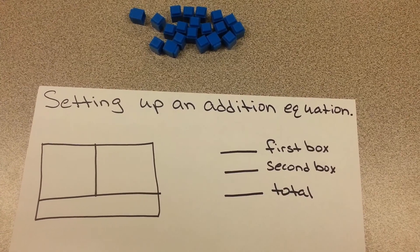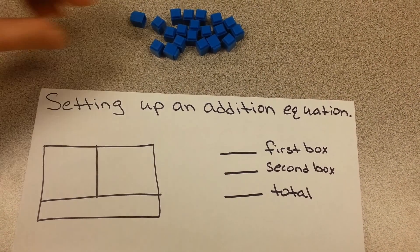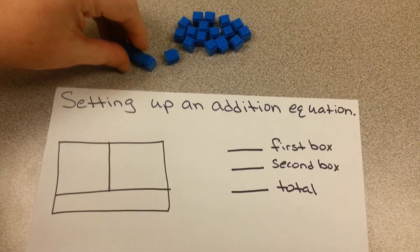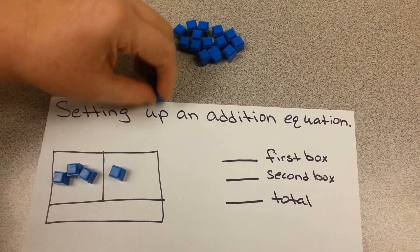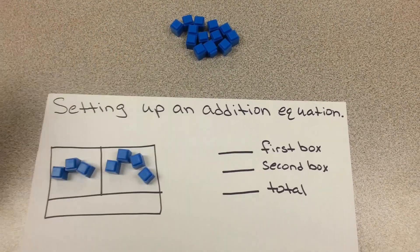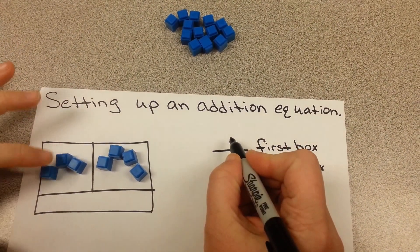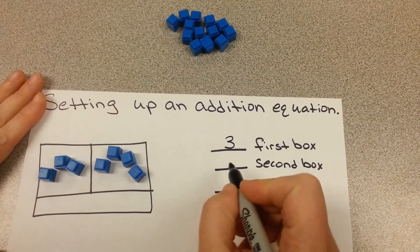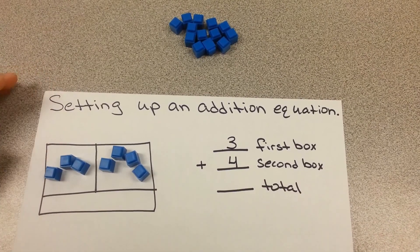First we are going to practice setting up an equation using base 10 blocks. We have our box here and we are going to put three blocks in the first box and four blocks in the second box. Now to set this up as an addition equation, we write three blocks in the first box and four blocks in the second box for a total of how many?